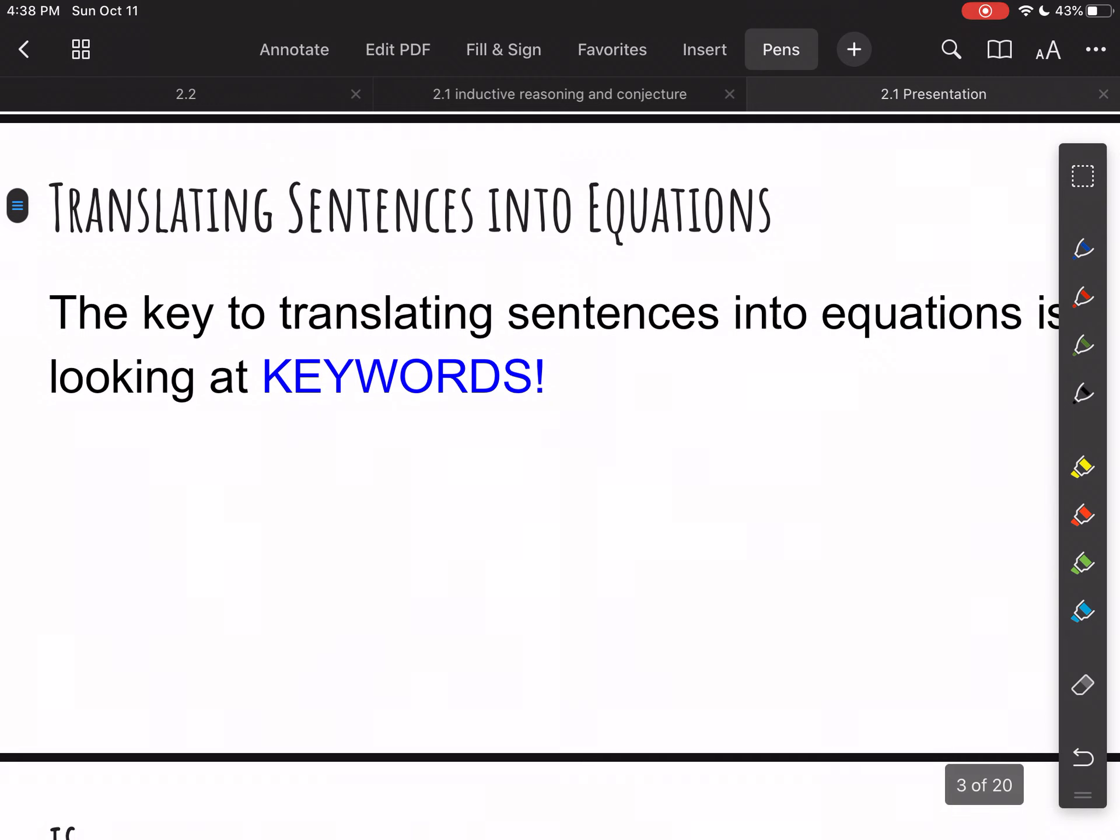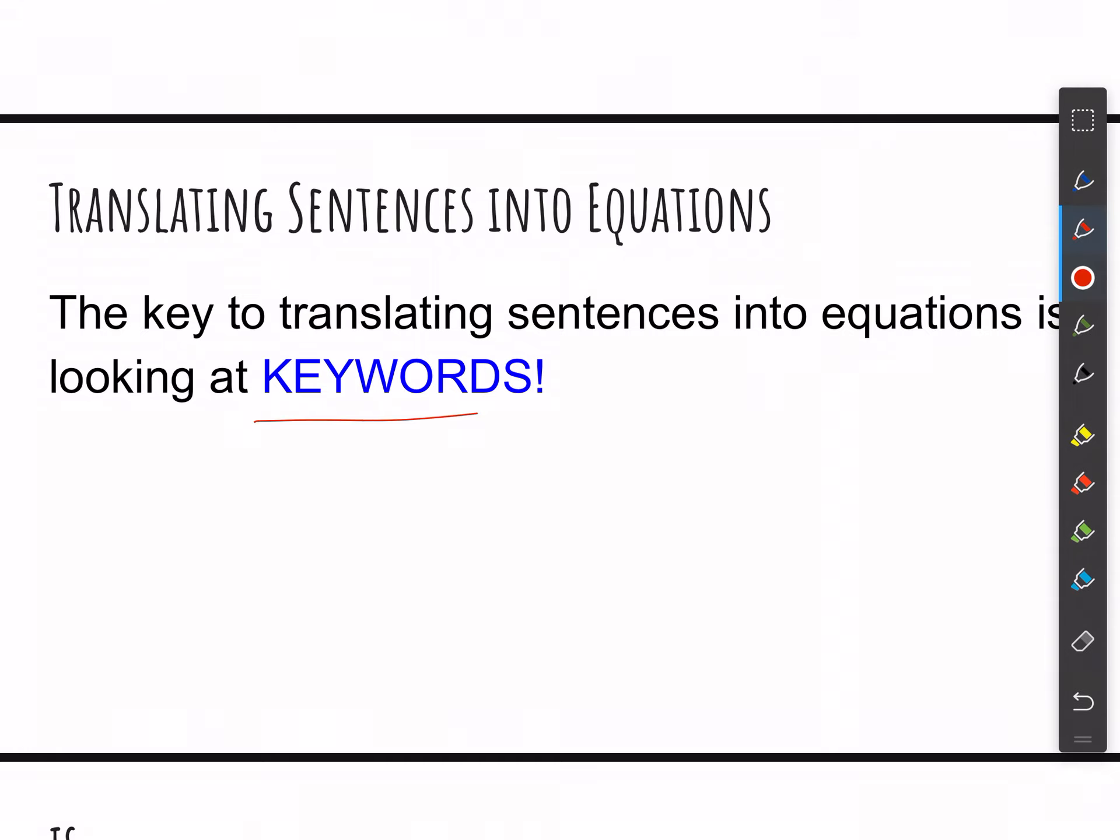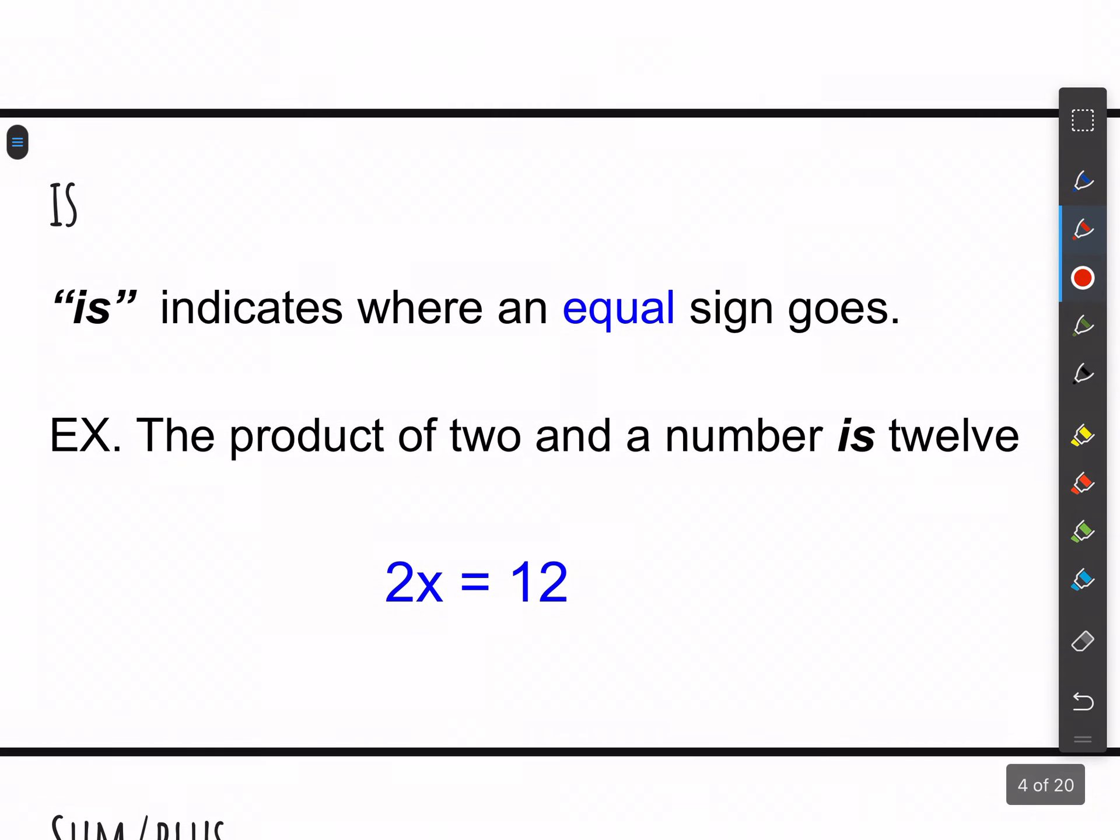Today, we're going to be writing equations, translating sentences into equations, and vice versa. So the key to translating sentences into equations is definitely looking at keywords. Keywords are very important. And I think you probably know these. We've done a lot of them actually in Chapter 1, so this is kind of a review. But let's look at a couple of keywords.